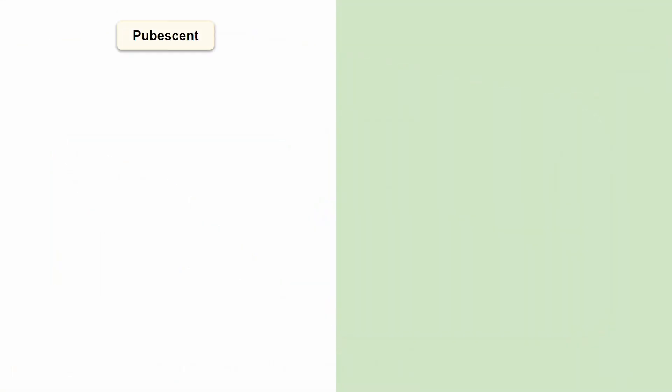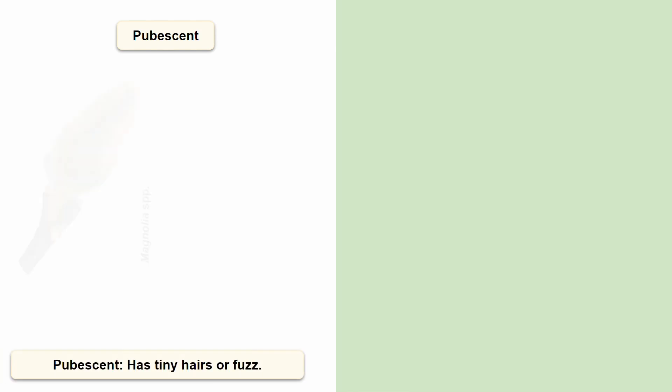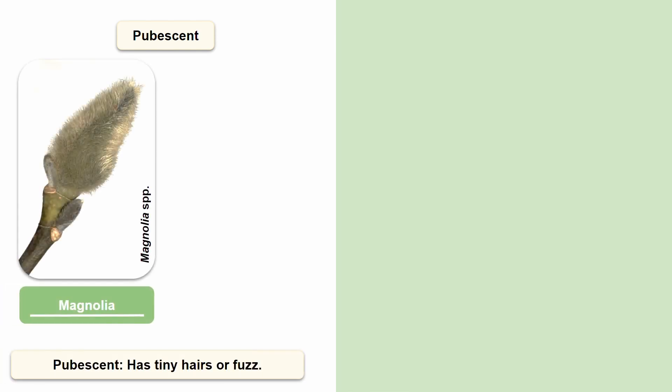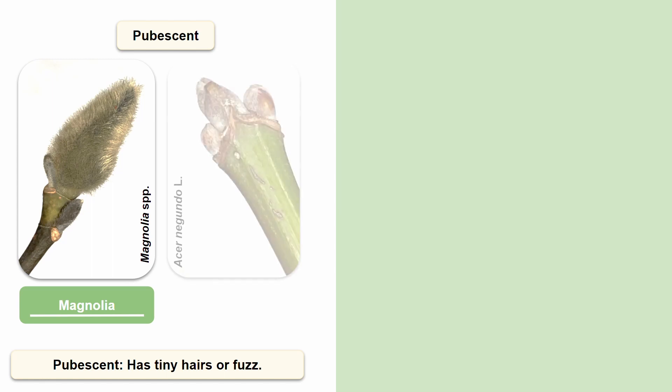But what does pubescent mean? Well, when a bud has tiny hairs or is fuzzy, it is pubescent. The apical bud of a magnolia twig is highly pubescent. Sometimes pubescence can be difficult to spot. The apical bud of a box elder is not super fuzzy, but it still has visible white hairs. This makes box elder technically pubescent.